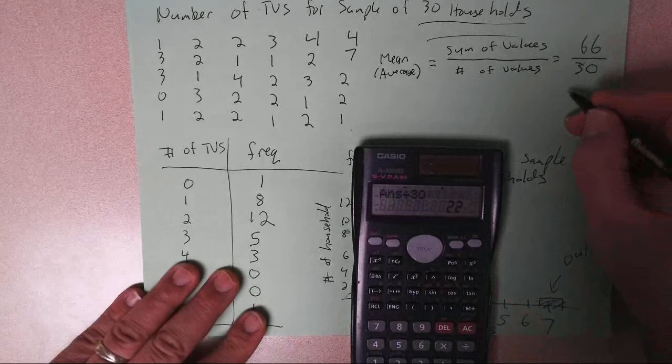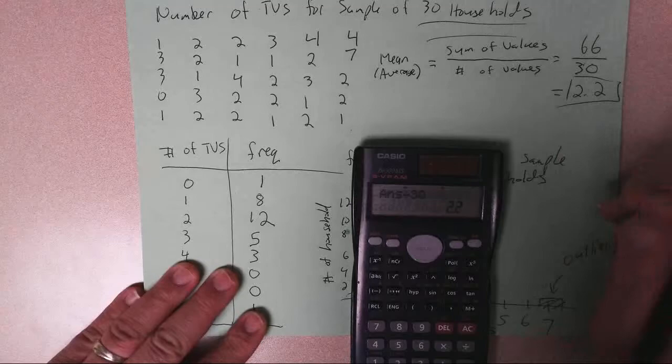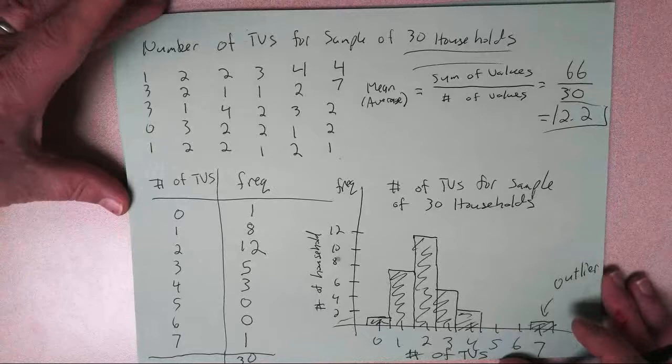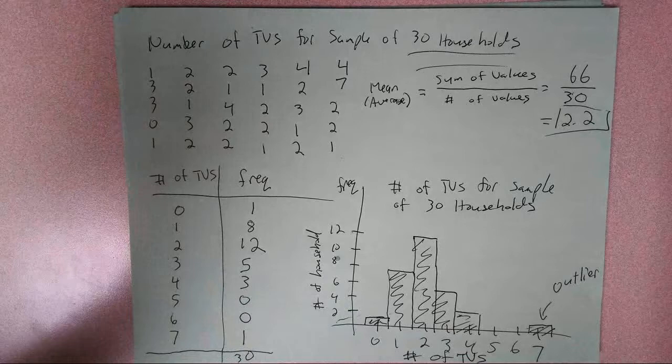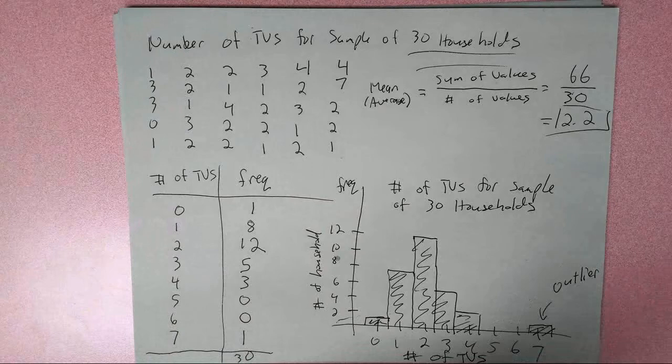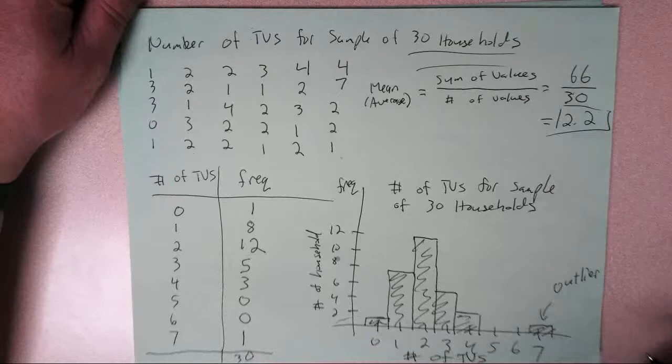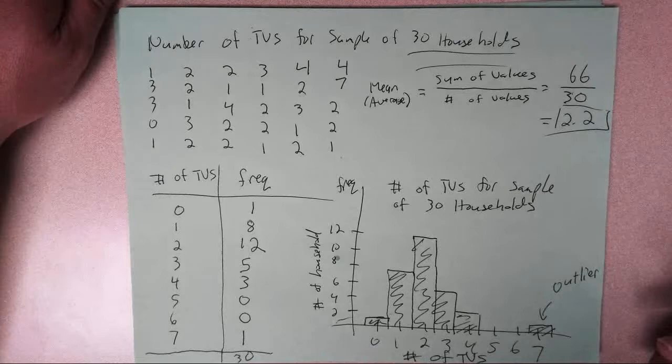And so I get 66 over 30, and then what this ends up being is 2.2 TVs. And so on average, a household has 2.2 TVs. Now, of course, they have either like 2 TVs or 5 or 1 or 7, a whole number. So this is kind of like you're weighing that. And on average, it's not quite 2 TVs, certainly not 3 TVs. It's a little more than 2 when you average them all out. And so that's the idea of the average. You're adding all the values in the data set, dividing by the number of values.